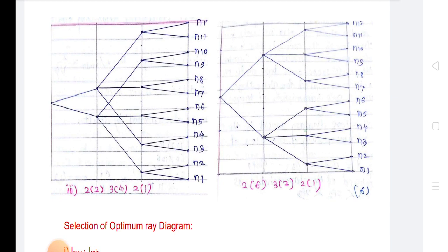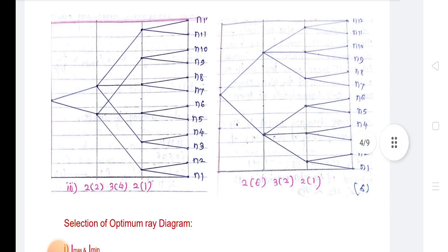Where Q is equal to the number of stages where transmissions are equal, and Z is the number of combinations given. A more general expression for the total number of spindle speeds can be written as Z = P1^X1 × P2^X2 × ... × Pn^Xn. This equation is called the structural formula for a multispindle gearbox.